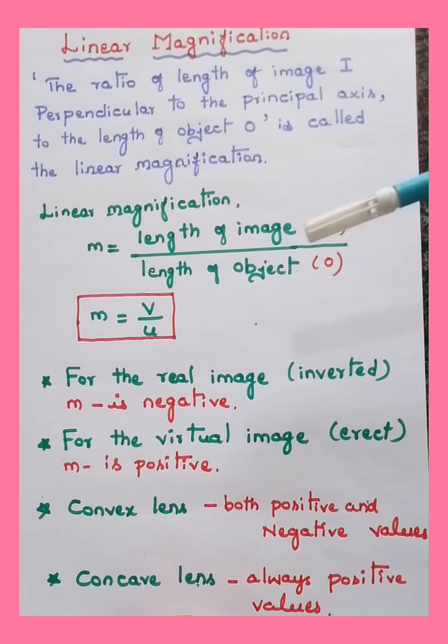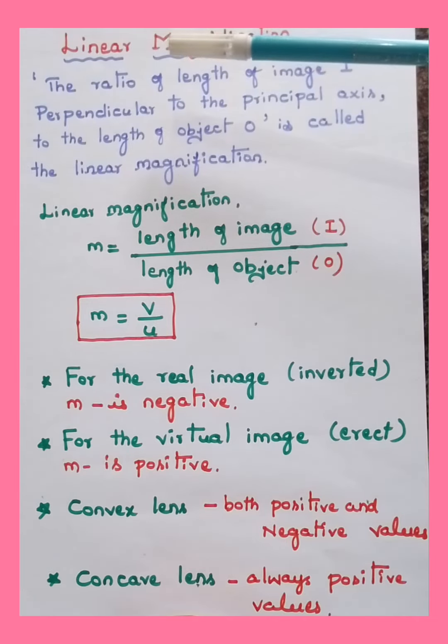Now this linear magnification talks about the size of an object. When the position of the object changes, there is a change in the position as well as in the size of the image formed.